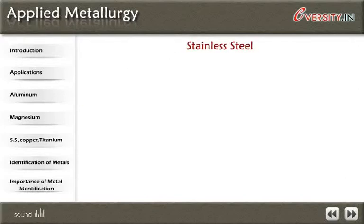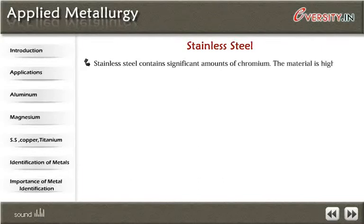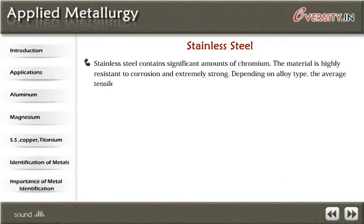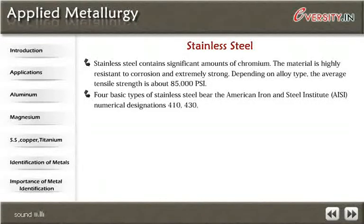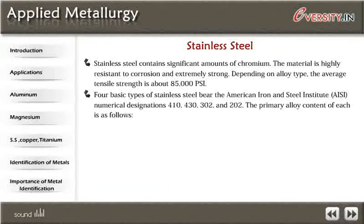Stainless Steel: Stainless steel contains significant amounts of chromium. The material is highly resistant to corrosion and extremely strong. Depending on alloy type, the average tensile strength is about 85,000 PSI. Four basic types of stainless steel bear the American Iron and Steel Institute numerical designations: 410, 430, 302, and 202. The primary alloy content of each is as follows — 410: 12% chromium.